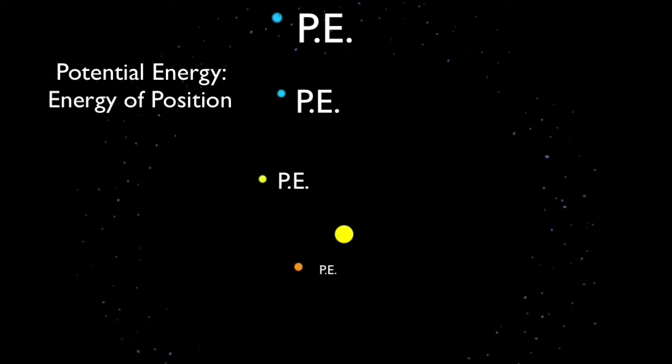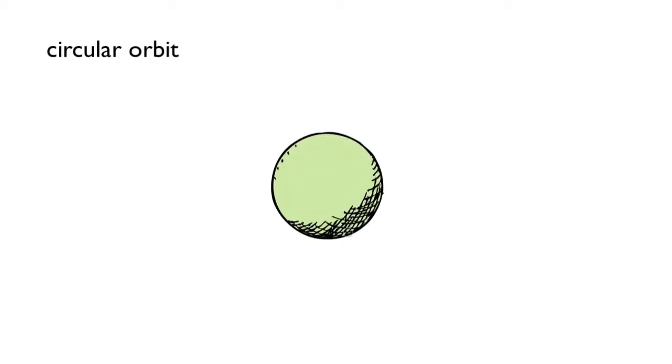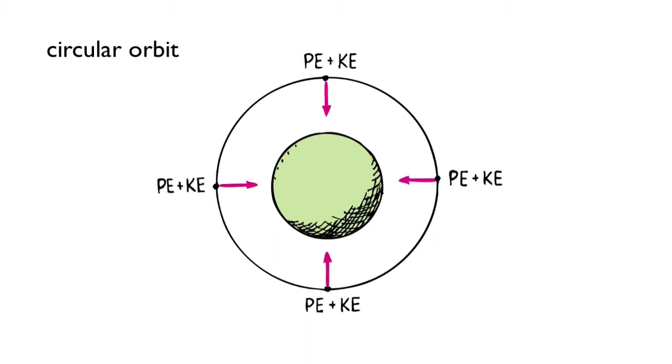In a circular orbit, a satellite's kinetic and potential energies remain the same.